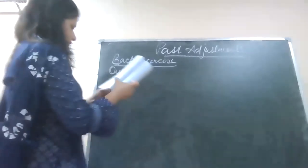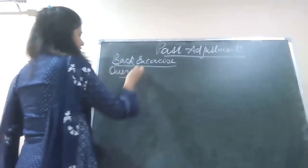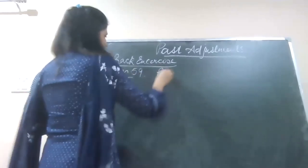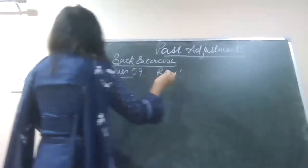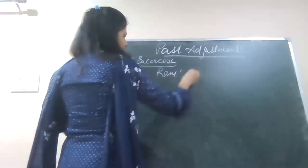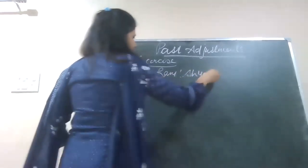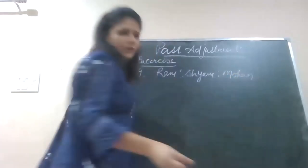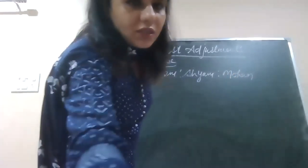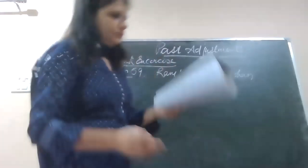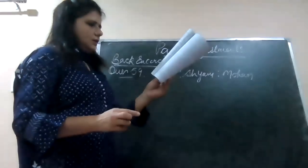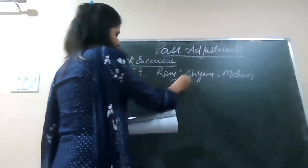Yes, we didn't see 45, this is 59 question, not 47. This is 59 question. We were having in this question three partners: Ram, Shyam, and Mohan. Their profit sharing ratio is 2 is to 1 is to 2.